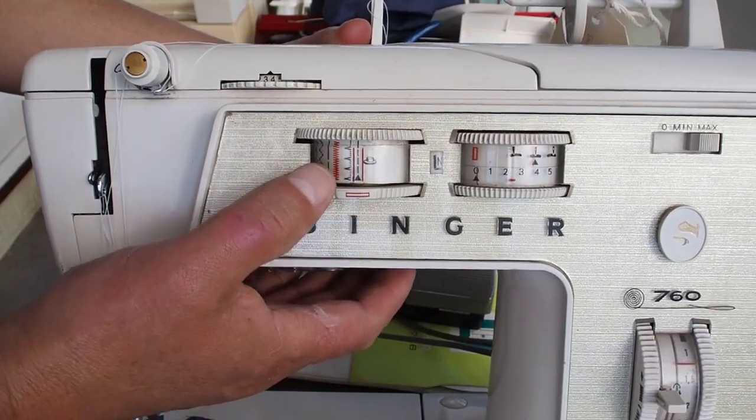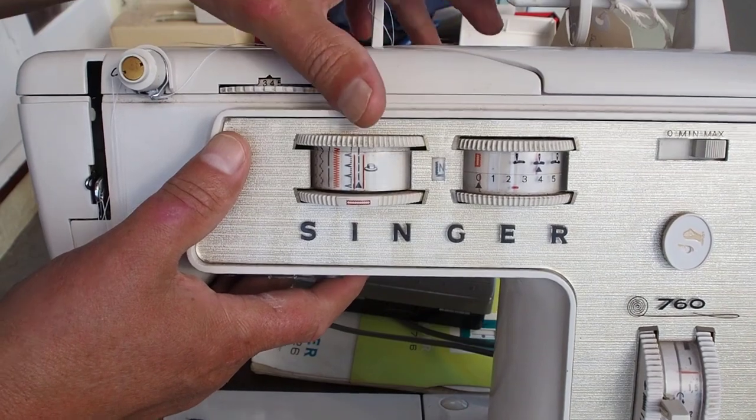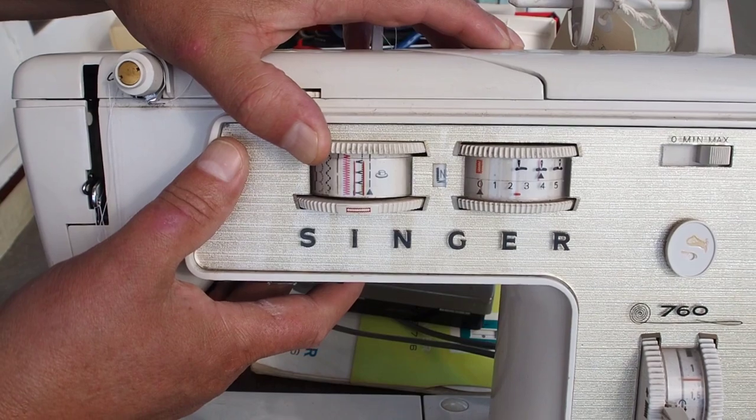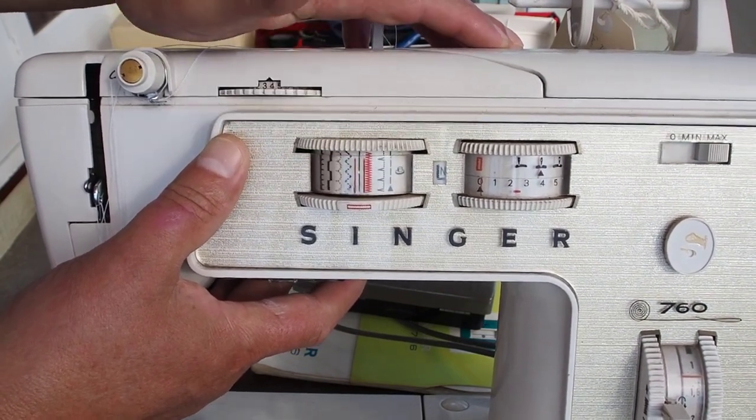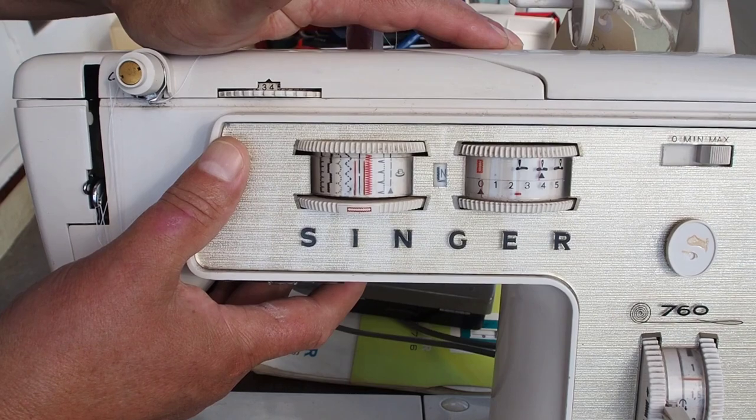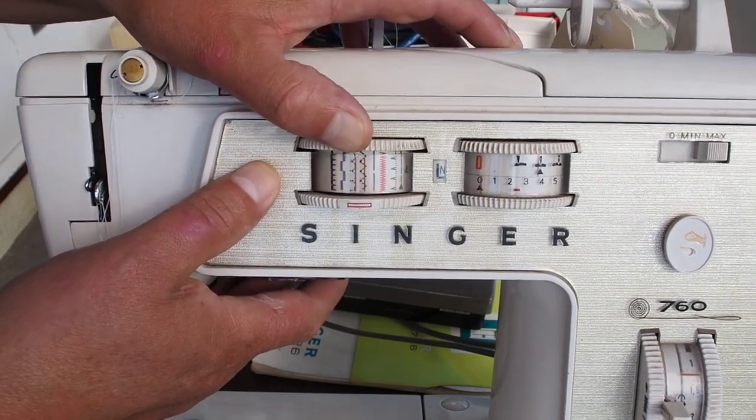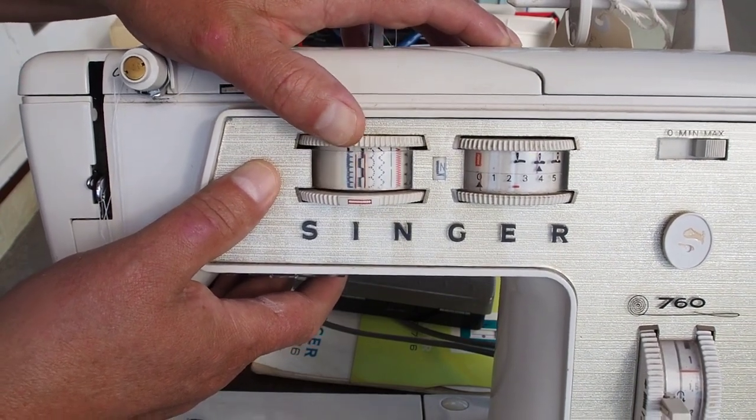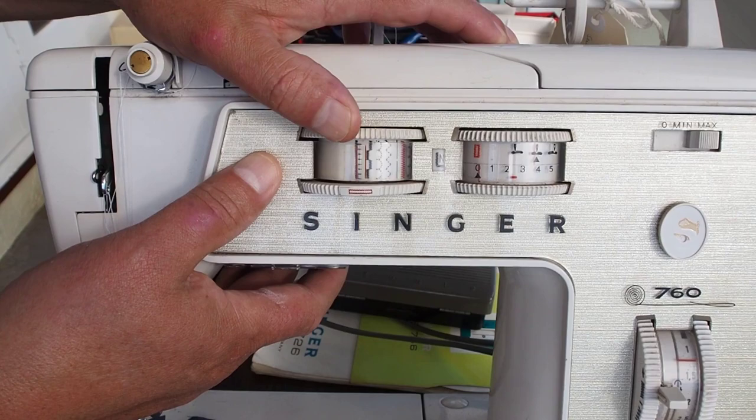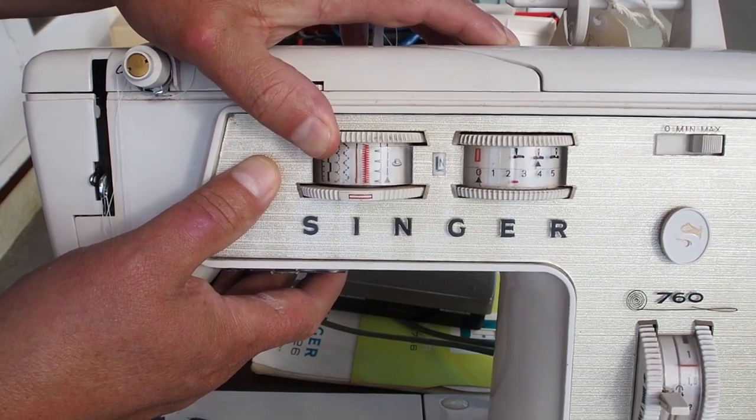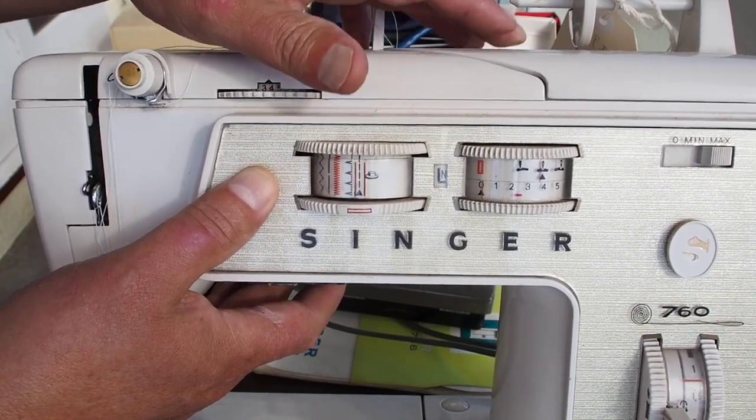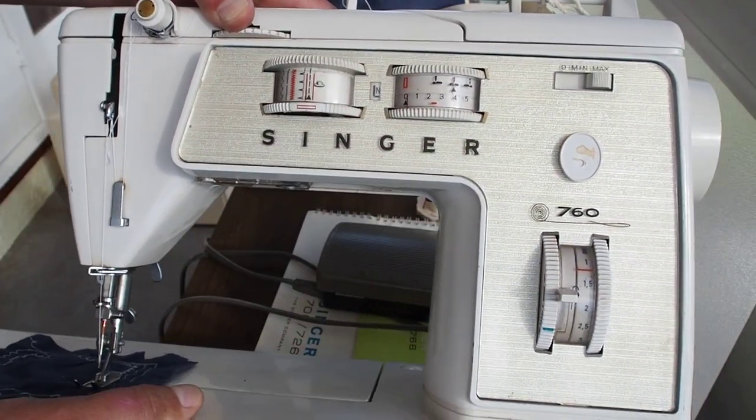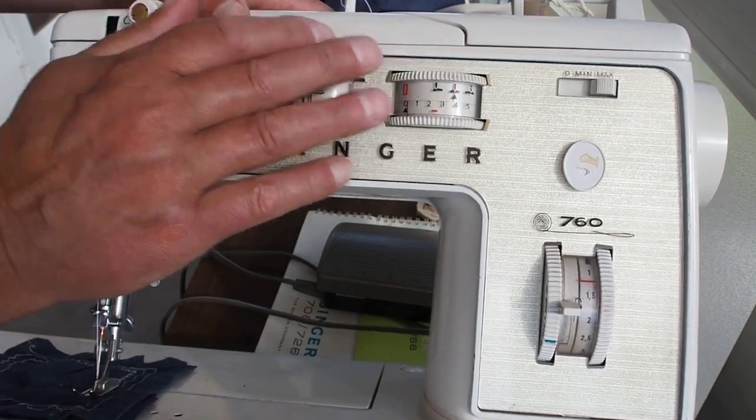You've got your built-in stitches with this model as well - the 760. We've got straight, blind hemming type stitch, zigzag, a basting type stitch, tricot, scallop, and a couple of decorative type stitches there. So it's got a few more built-in stitches than the 726.